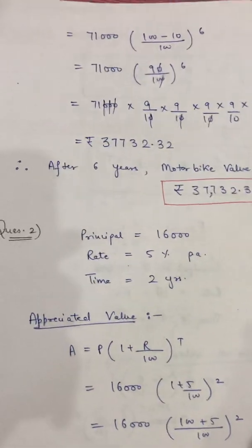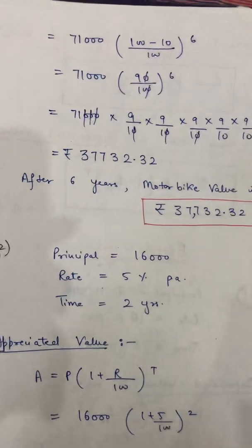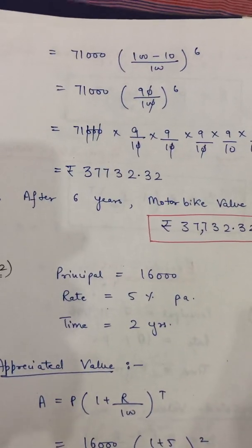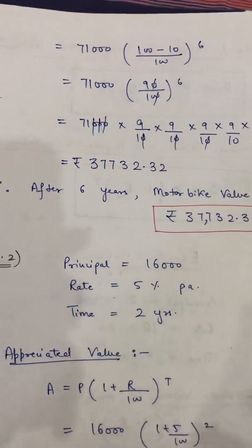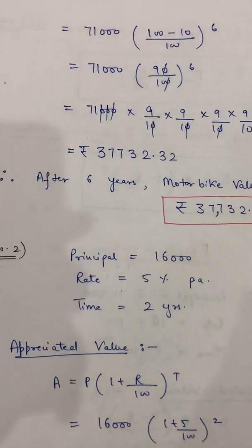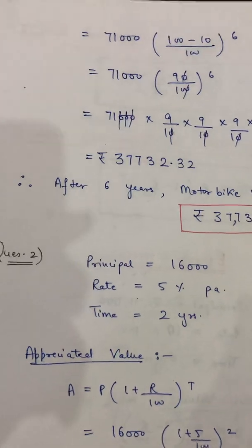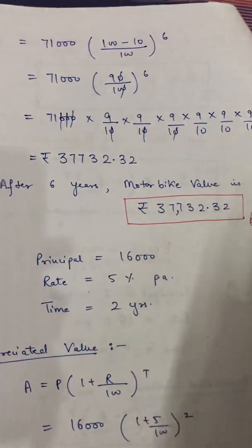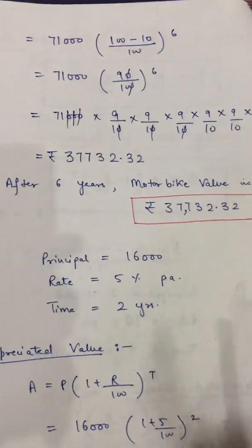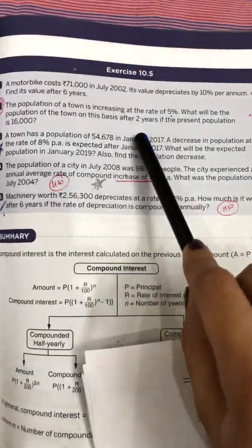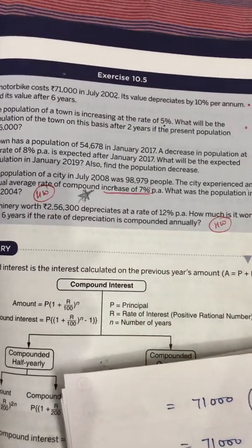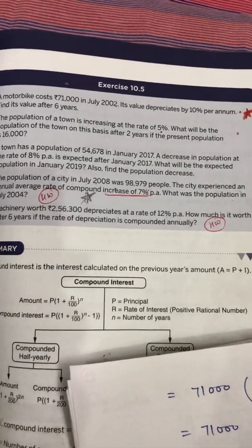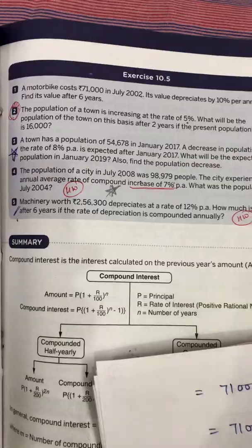This is very simple — just check whether the question is based on the appreciated or depreciated formula, then put the formula and place all the values one by one. In this exercise, you don't calculate compound interest; you only find the amount using the depreciated or appreciated formula.